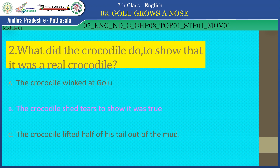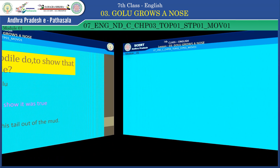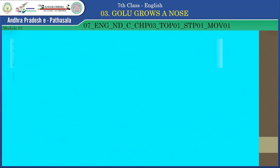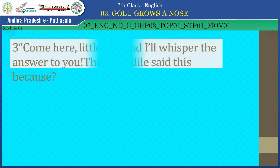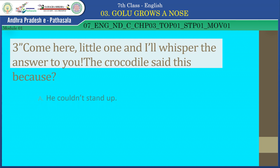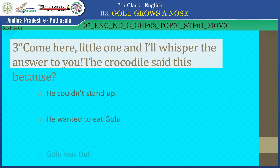'Come here, little one, and I'll whisper the answer to you.' The crocodile said this because — A. He couldn't stand up, B. He wanted to eat Golu, C. Golu was deaf. Yes, children, you are correct. The answer is B — he wanted to eat Golu. Your guess is very nice.